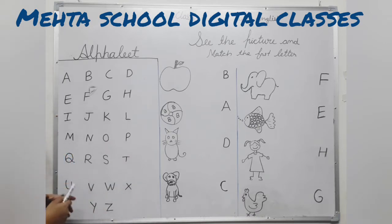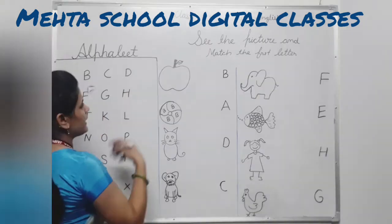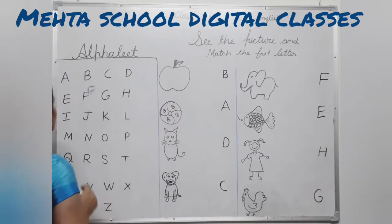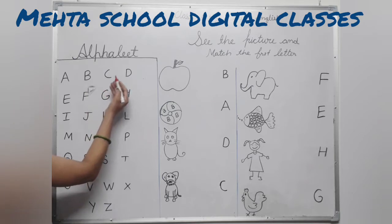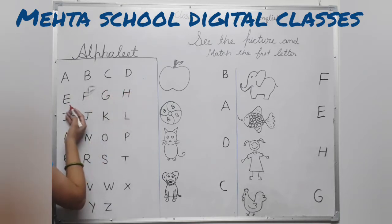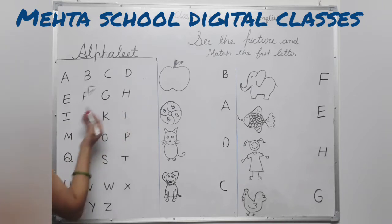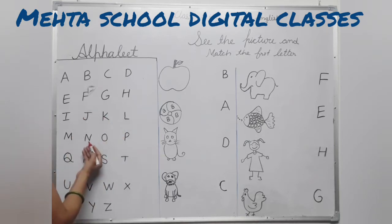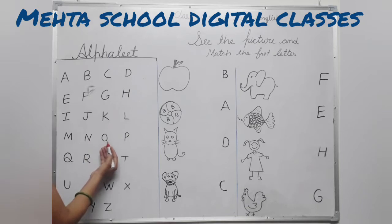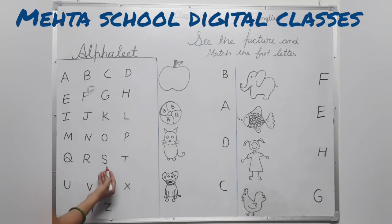Students, first we will speak the alphabet, then we will match the first letter. Okay, students, look at the board and speak: A, B, C, D, E, F, G, H, I, J, K, L, M, N, O, P, Q, R, S.